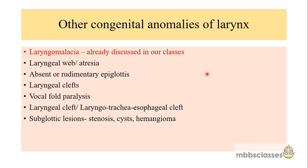The other congenital anomalies of the larynx are laryngomalacia, which we have already discussed in our previous video. The other anomalies of the larynx which may present as stridor in infancy are laryngeal web, atresia, absent or rudimentary epiglottis, laryngeal cleft, vocal cord paralysis, laryngotracheoesophageal cleft, and subglottic lesions. Today we are restricting our video only on the congenital laryngeal cyst and the laryngocele.